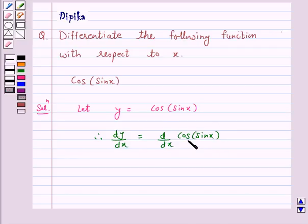Now we know that derivative of cos theta is minus sin theta and derivative of sin theta is cos theta. So this is equal to minus sin of sin x into d/dx of sin x.